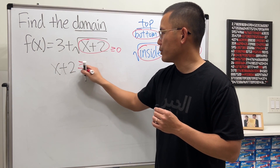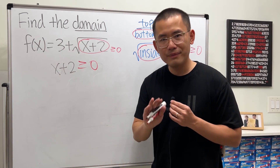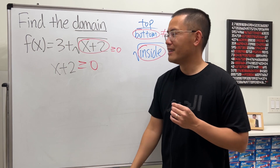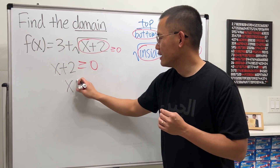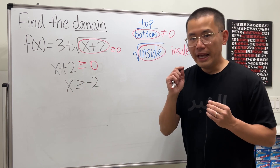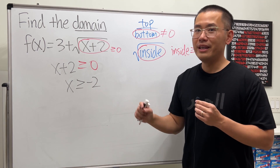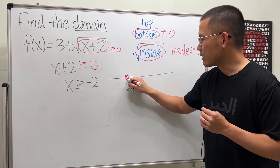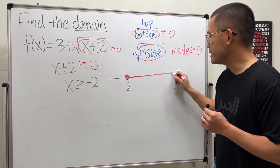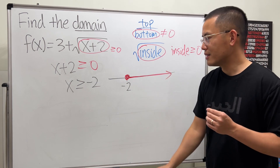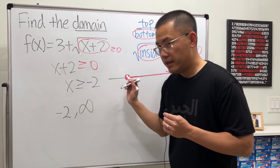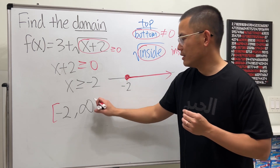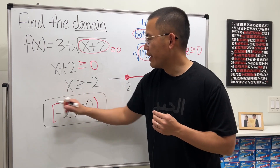All we have to do is take the inside, x plus 2, and make it greater than or equal to 0. The 3 on the outside doesn't matter — it's not going to cause any trouble. Subtract 2 from both sides: x is greater than or equal to negative 2. So on the number line, negative 2 gets a closed circle and we go to the right. The domain is negative 2 to infinity with a square bracket at negative 2 and a parenthesis at infinity.